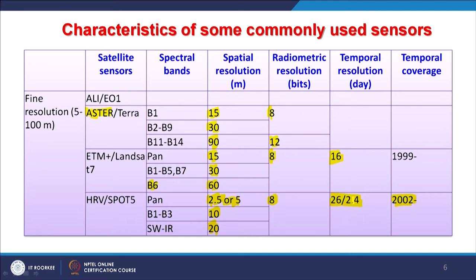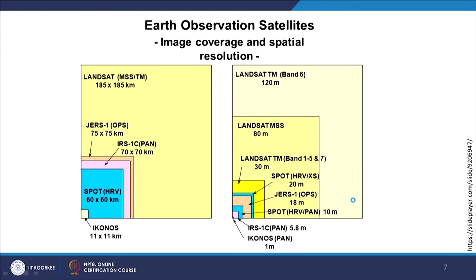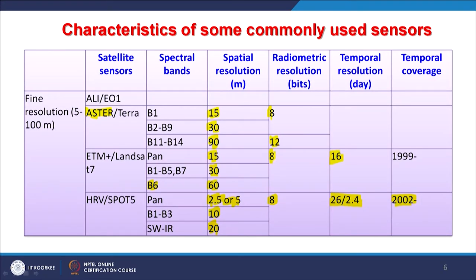With a narrow swath, many days are required to revisit the same area — in SPOT's case, 26 days. Comparing swath versus spatial resolution: Landsat MSS and TM cover 185 by 185 kilometers in one scene, whereas SPOT covers only 60 by 60 kilometers — roughly one-third in both dimensions. The temporal resolution reduces accordingly: Landsat is 16 days and SPOT is 26 days. Higher spatial resolution means smaller swath width and therefore poorer temporal resolution.